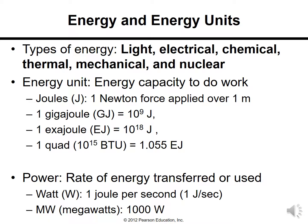The different types of energies we deal with are light energy, electrical energy, chemical energy, thermal energy, mechanical energy, and nuclear energy. The unit used to measure energy is the joule — capacity to do work — expressed as gigajoules, exajoules, or quads. Power is the rate of energy transferred or used, such as a 65-watt or 100-watt light bulb, where watt is the unit.